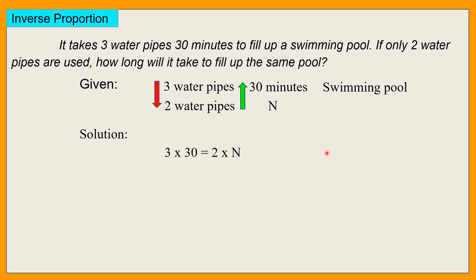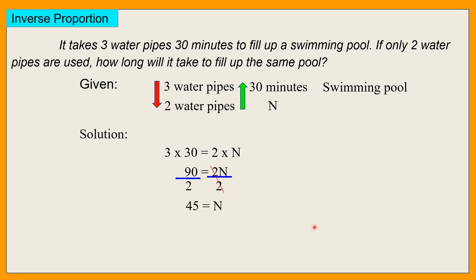Solution: since inverse, times na natin. 3 times 30 is equal to 2 times N. So this is now 90, 90 equals 2N. Para mawala yung 2, divide by 2 — 90 divided by 2. Cancel. 45 is equal to N.